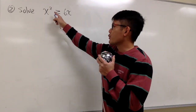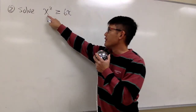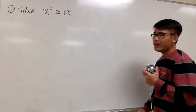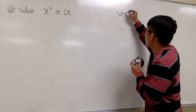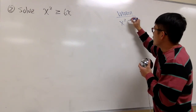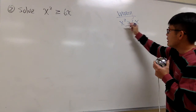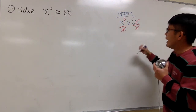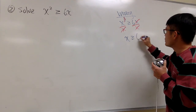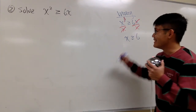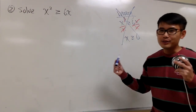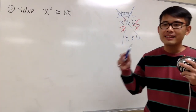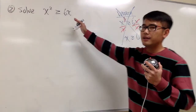Here's the second example: solve x squared greater than or equal to 6x. I want to show you a popular wrong approach first. It might seem like you can divide both sides by x, cancel the x's, and get x is greater than or equal to 6. But this is not correct. You really have to find the critical numbers and do the number line test.